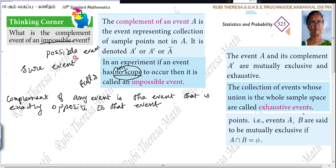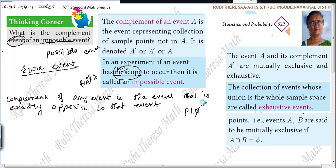The complement event of an impossible event is nothing but a sure event. We say this because both are mutually exclusive — their intersection will be an empty set.